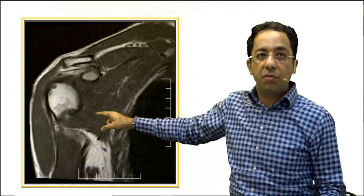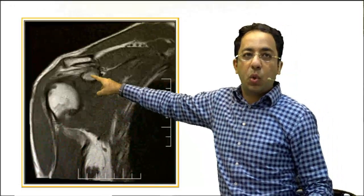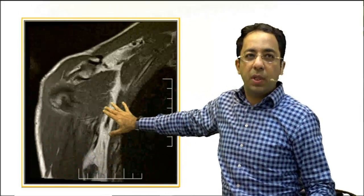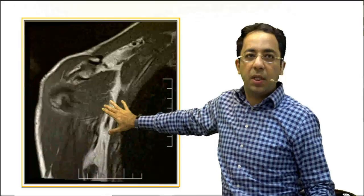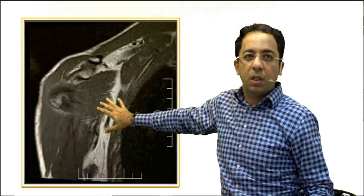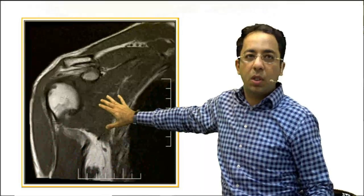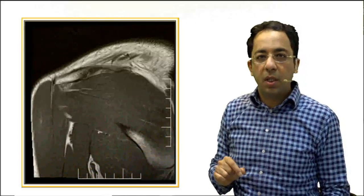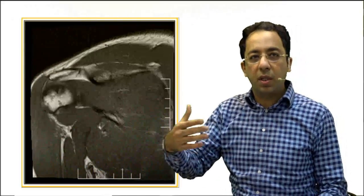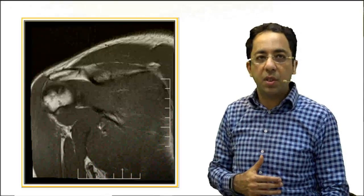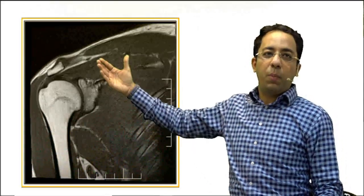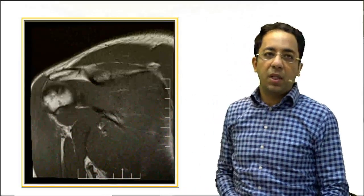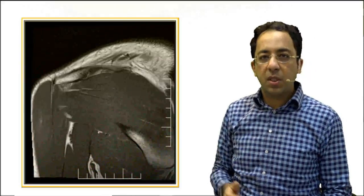Coming to the main focus of this session: on the coronal MRI image you can identify the coracoid process, and just below it you will see a tendon going towards the humerus — that is your subscapularis. This is the tendon we discussed, the one earlier called the forgotten muscle. Going posteriorly from the supraspinatus, you can also see the infraspinatus and the teres minor, completing the rotator cuff anatomy on the MR image.